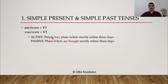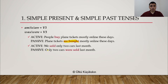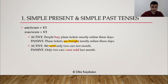For example, 'People buy plane tickets mostly online these days' — this is active voice. In passive: 'Plane tickets are bought' — am/is/are plus verb 3. Or, 'We sold only two cars last month' — this is the active version. And the passive version is 'Only two cars were sold last month.' If you look at it carefully, our object 'only two cars' becomes the subject. Only two cars is the subject.